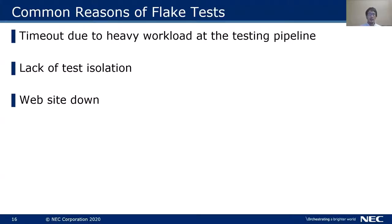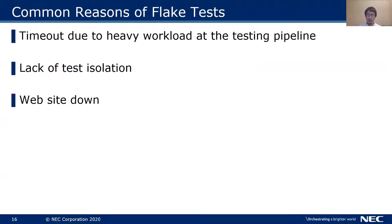Another simple reason is due to some websites going down. Testing pipelines download a lot of software, libraries, and container images from external websites. If some website is down, we face test failure on some test job. That's also a bad situation because we cannot solve these issues directly — it's out of our control. Other reasons include bugs on the software side, lack of locking, and mis-synchronization between components, which require deep investigation.